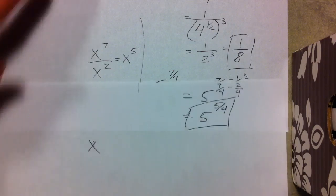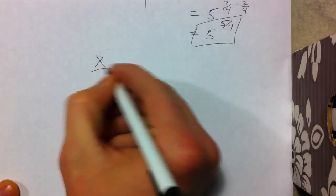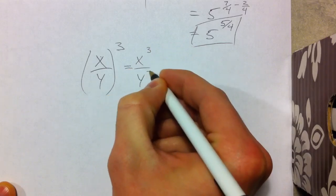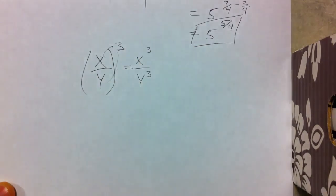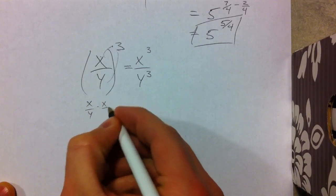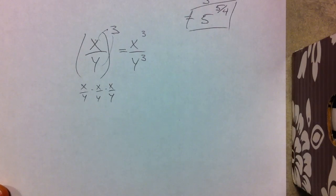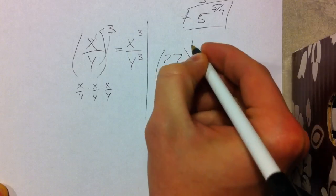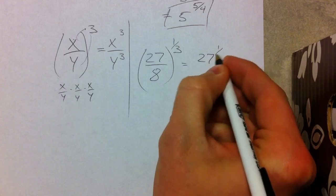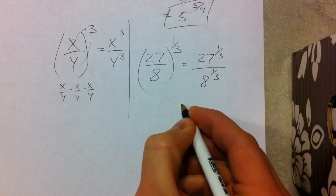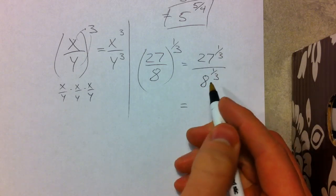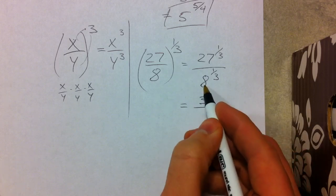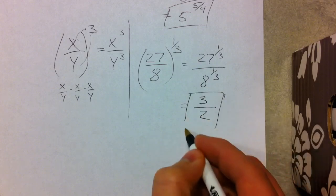Finally, x over y cubed equals x cubed over y cubed — you can distribute over division just like multiplication. If we have 27 over 8 to the 1 third power, that becomes 27 to the 1 third over 8 to the 1 third. The cubed root of 27 is 3, and the cubed root of 8 is 2, so we're left with 3 halves.